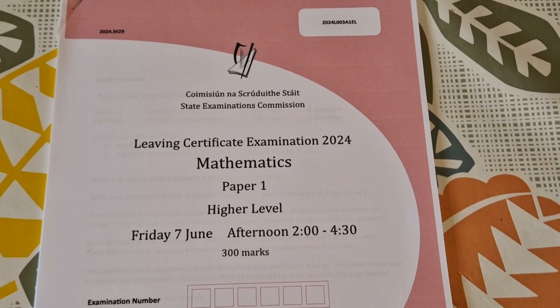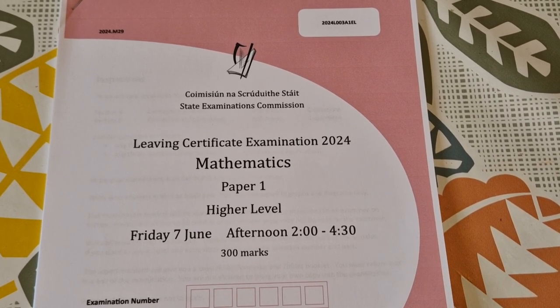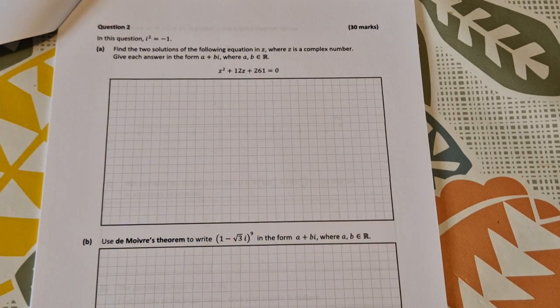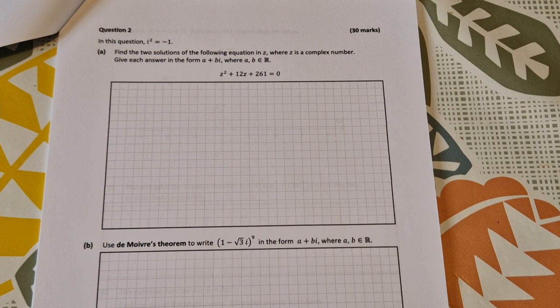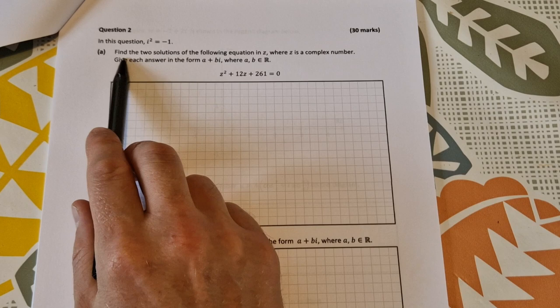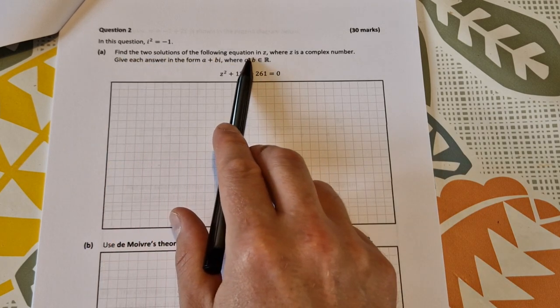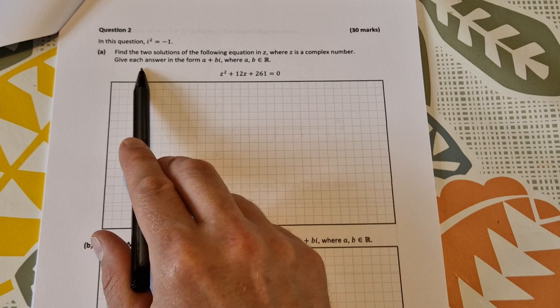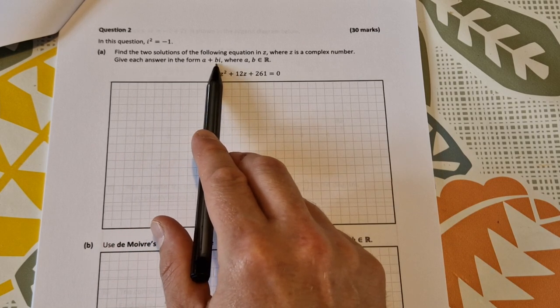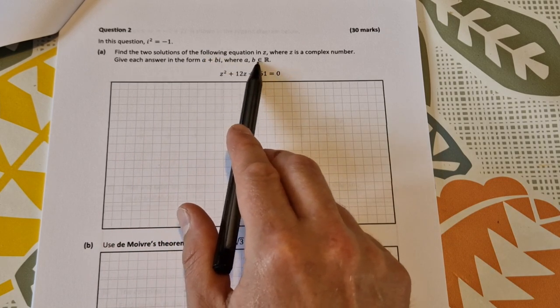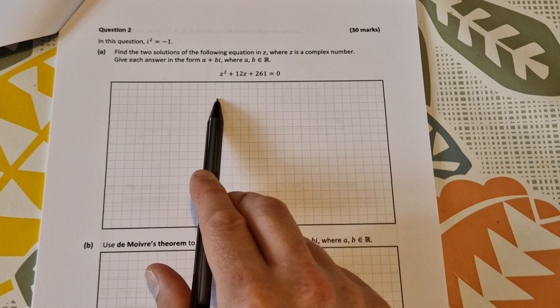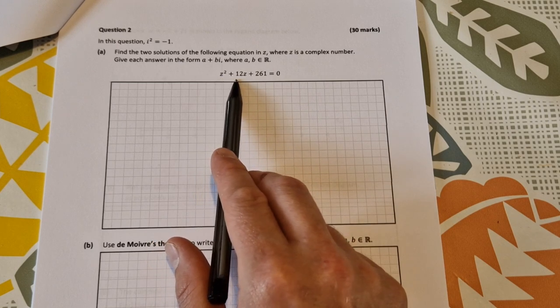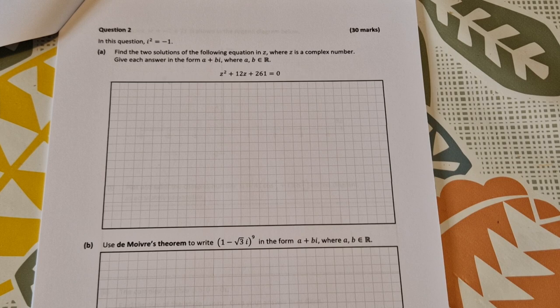Leave and start higher level maths 2024. This is the solution video to paper 1, question 2. So question 2 is our complex numbers question. And it starts by saying, find the two solutions of the following equation in z, where z is a complex number, and give each answer in the form a plus bi, so give it in complex form, where a and b are elements of the real numbers. The complex equation is z squared plus 12z plus 261 equal to 0.